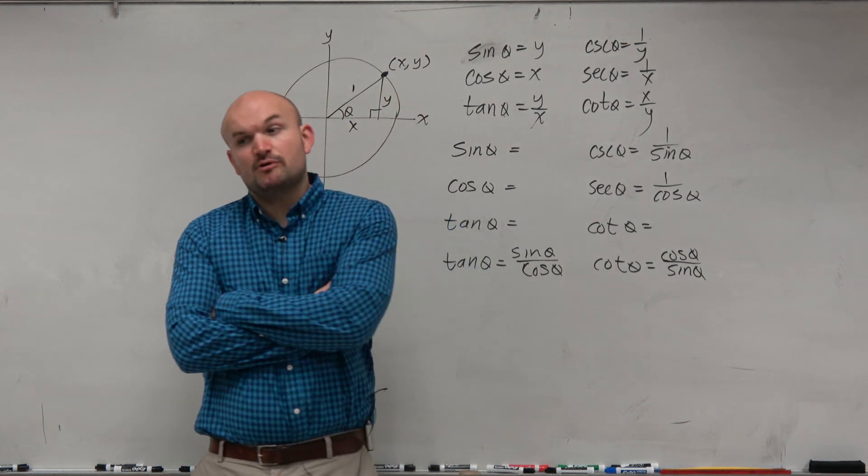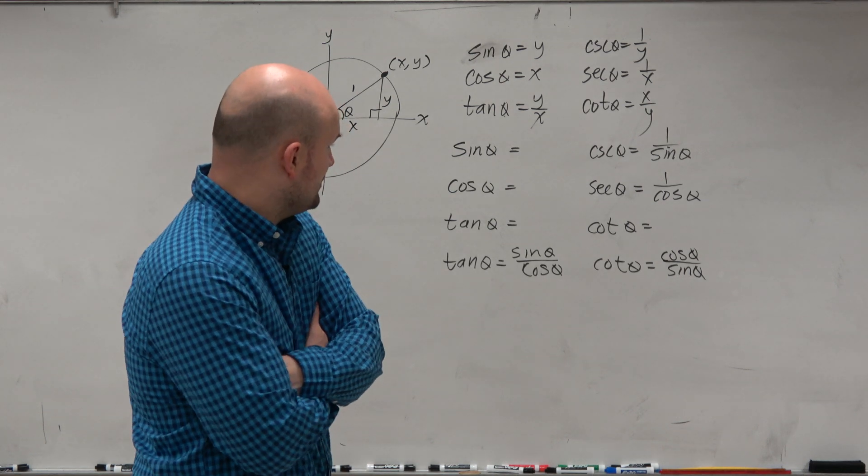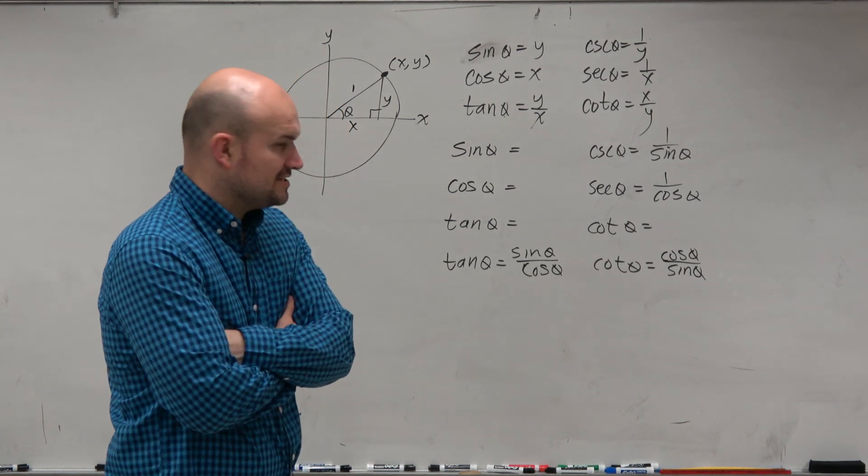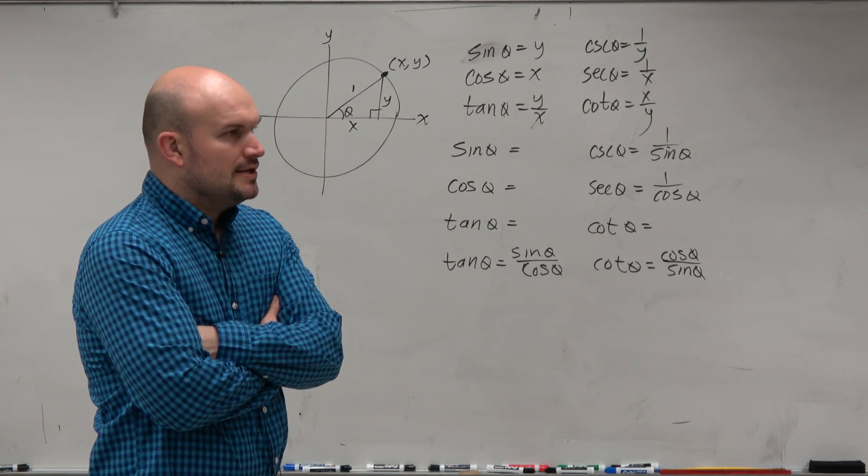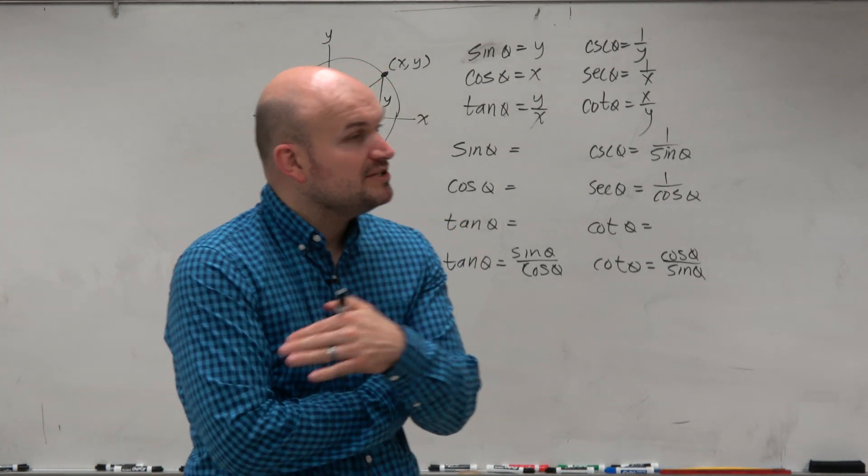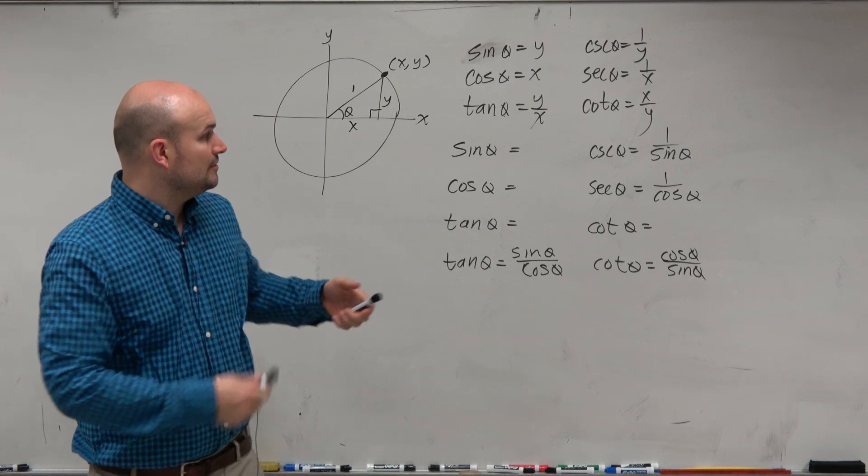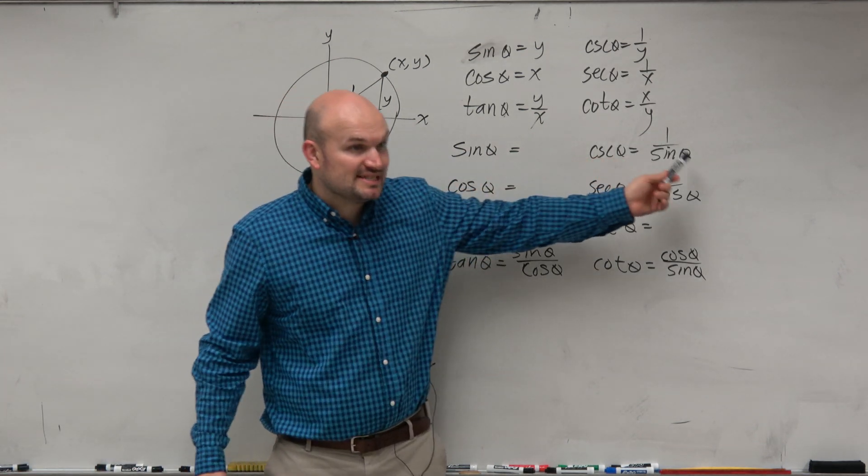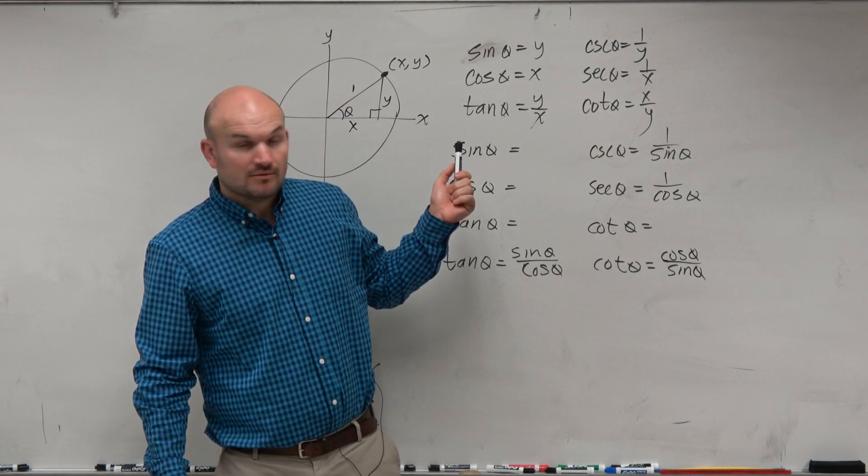So usually where we have difficulty or where students stop is when we look at the sine, cosine, tangent, and cotangent again. So again, what this comes into is understanding the relationships between a function and its reciprocal. Remember guys, these are reciprocal functions, right?